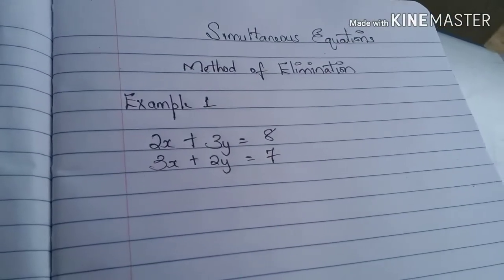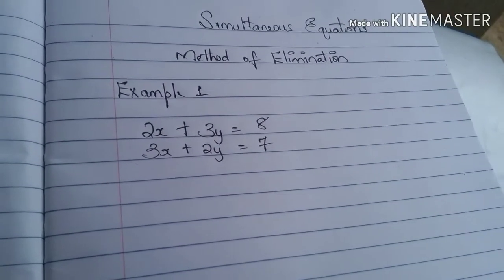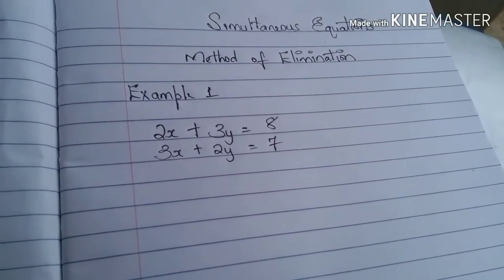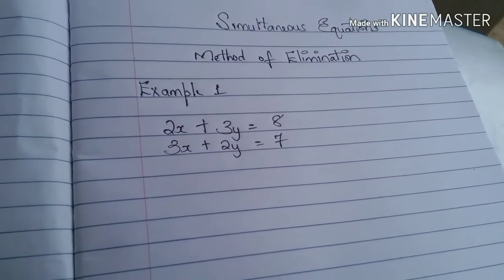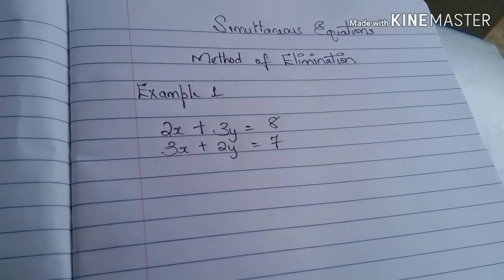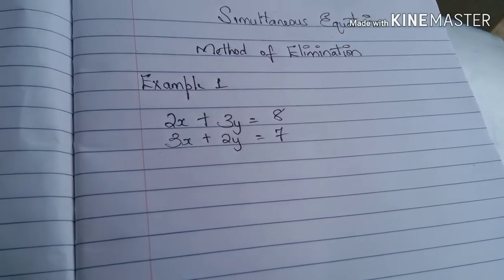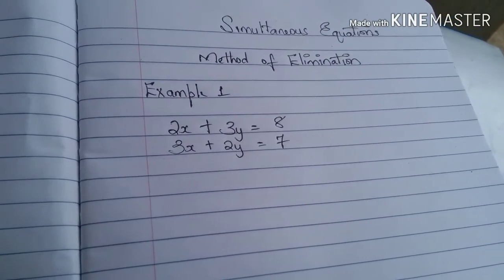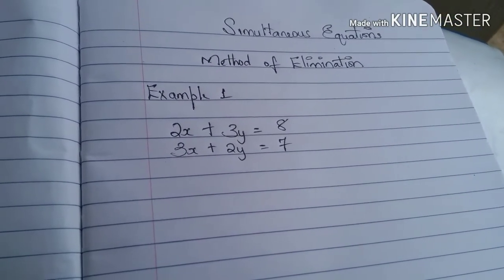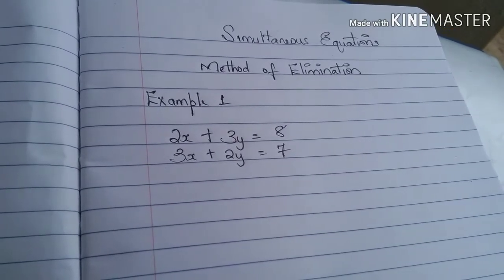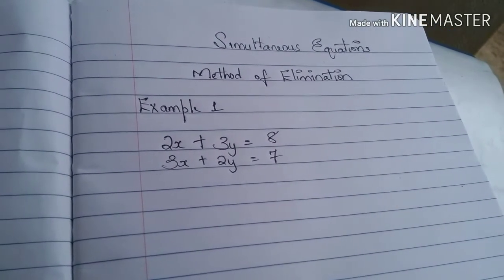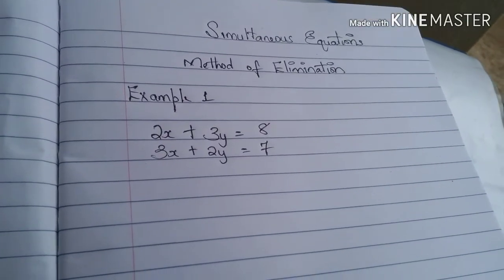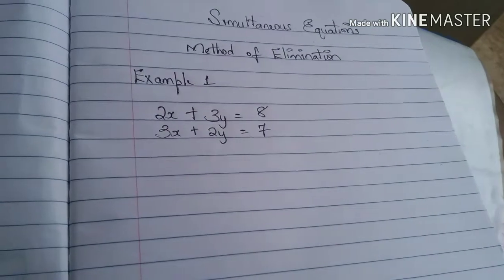Alright, so being that we're using the method of elimination, we know that once we made something, we get rid of it, right? So we need to eliminate or get rid of one of the variables, solve for the other in the process, and then we can do our substitution to solve for the eliminated variable. Alright, so let's get straight to it.